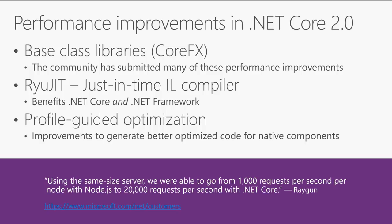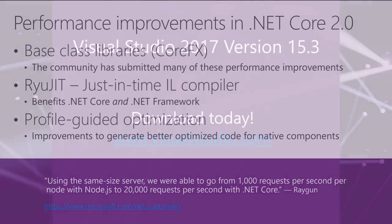We have profile-guided optimization, where we actually run applications through the system and measure how .NET behaves, then do optimizations based on the profiles we create. We're also running the same jitters on .NET Core as we have on the full framework. One of my favorite examples is Raygun — they used a node-based backend a couple of years ago. They took their same application, which was doing 1,000 requests per second on Node.js, moved it to .NET Core, and were able to get 20,000 requests a second — mainly because they are an IO-heavy application and we can do more background IO than Node can.